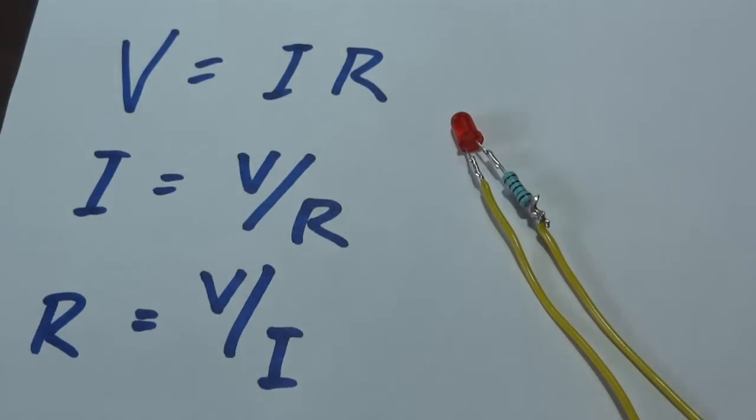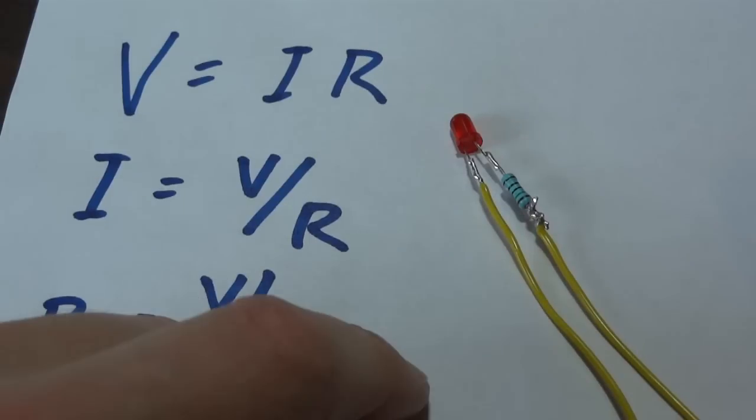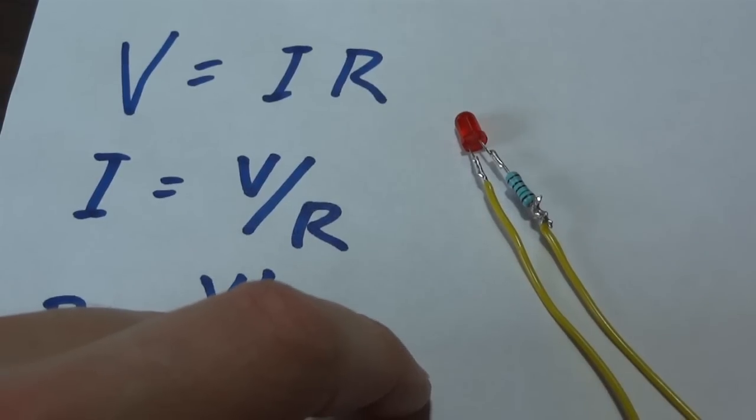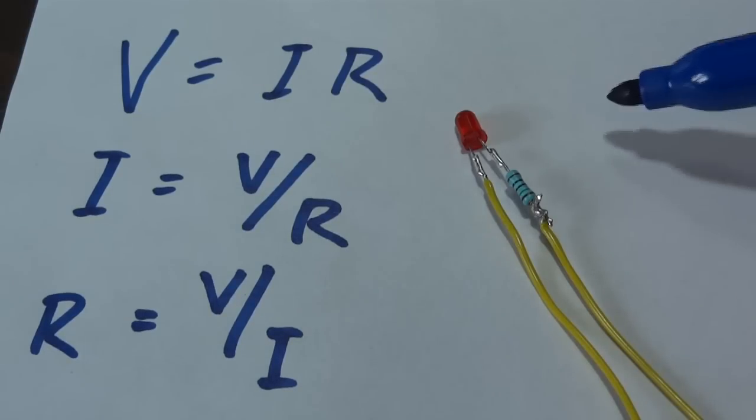So we've got 5 volts being supplied, but we only need 2 volts, so basically we need to drop 3 volts across the resistor. We know there's going to be 20 milliamps of current flowing through the circuit, so we know the voltage and we know the current.